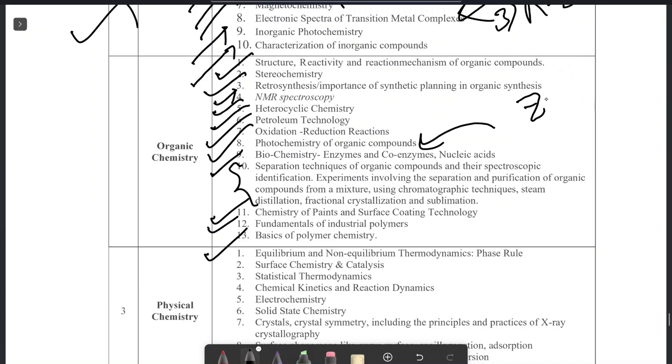For organic chemistry, the most important book is Clayden and Warren. In Clayden and Warren, you can get most of these topics. For example, retrosynthesis, oxidation reduction. Then you can read stereochemistry from Eliel. NMR spectroscopy from Pavia.